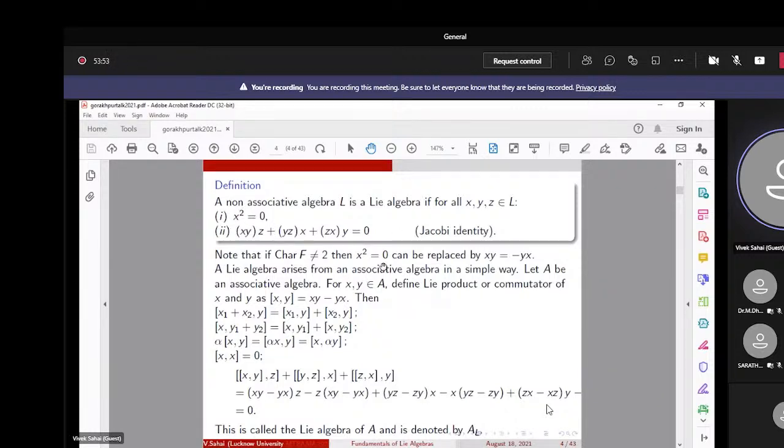Now how to check this Jacobi identity? You have that [[x,y],z] + [[y,z],x] + [[z,x],y]. Because this is the first such computation, I am giving the details.